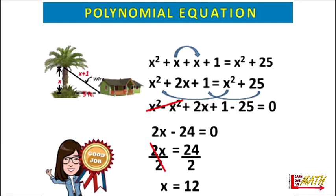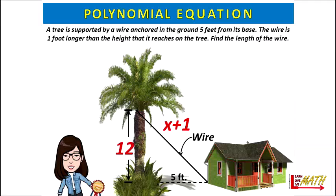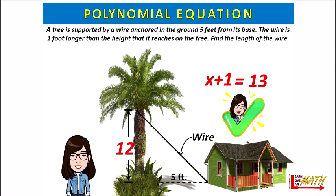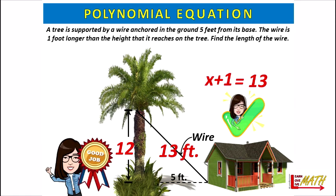Performing the mathematical operations, we now have x equals 12, so x plus one equals 13. We find out that 13 feet is the length of the wire.